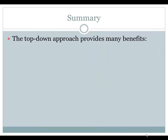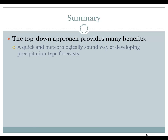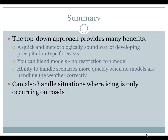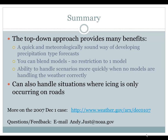In summary, the top-down approach provides many benefits. It is a quick, meteorologically sound way of developing precipitation type forecasts, and you can blend models — you are not restricted to one model. You also have the ability to handle scenarios more quickly when no models are handling the weather correctly. You can look at IR imagery and adjust your prob ice present, and take a look at RAOB and AMDAR data to adjust all three top-down grids as needed. You can also handle situations where icing is occurring only on roads. More on the December 1, 2007 case can be found at the listed website address. If you have any questions or feedback, feel free to email me at andy.just@noaa.gov. Thank you.